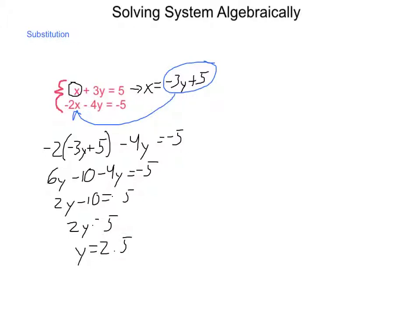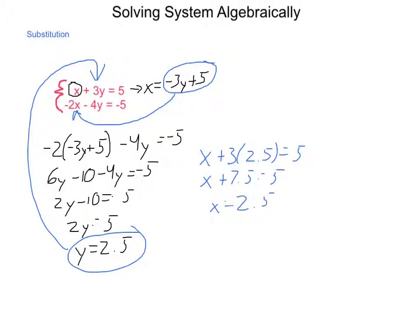Now that I have a value for y, I'm going to take this and put it back into one of my two original equations to find the other value. I choose to do it into the first equation. So x + 3 times y, which is 2.5, has to equal 5. That's x + 7.5 = 5. Subtract 7.5, and x is -2.5. So my solution to this system of equations is the point (-2.5, 2.5).